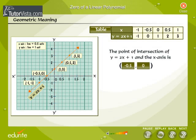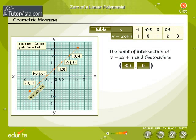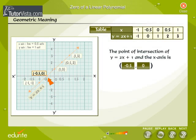The point of intersection of y = 2x + 1 and the x-axis is (-0.5, 0).